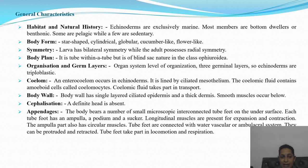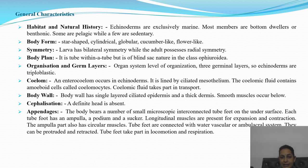Body form varies — star-shaped, cylindrical, globular, cucumber-like, or flower-like. Symmetry: larvae have bilateral symmetry while the adult possesses radial symmetry. Body plan is tube within tube, but in some like Ophiuroidea it is of a blind-sac nature.